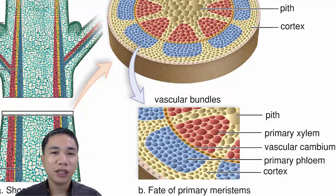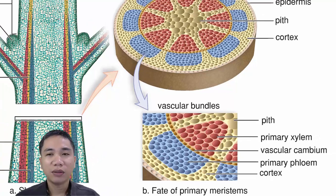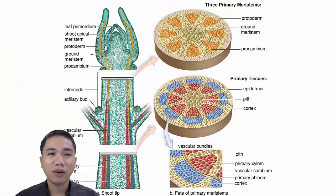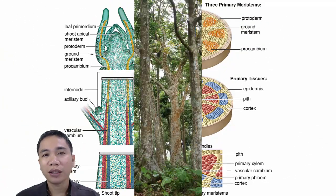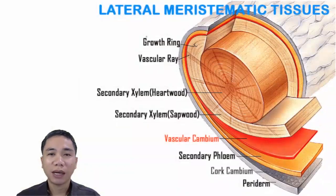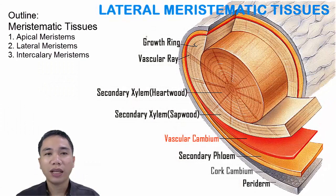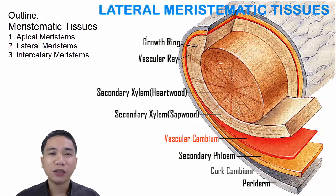Plants that remain fleshy their entire life are limited only to primary growth. But remember that there are also woody plants, and the bulk of woody tissues comes from another type of meristematic tissue called the lateral meristems, which are no longer found at the tips — they are usually embedded within the mature tissues of the plant.